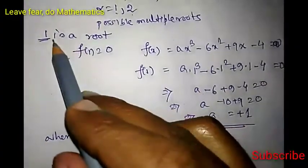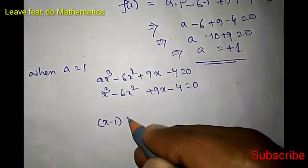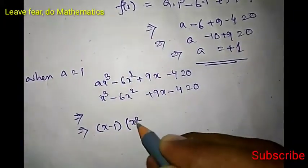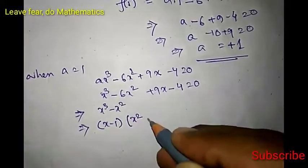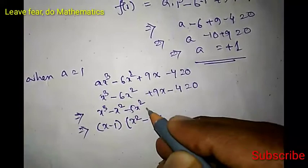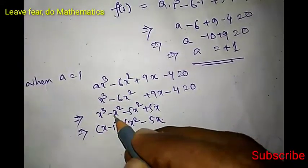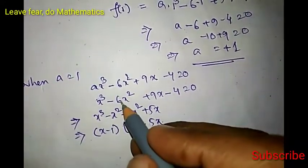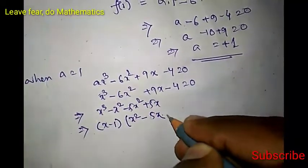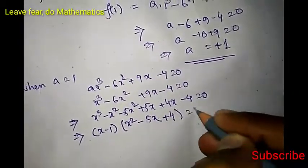When A equals 1, the equation is x cubed minus 6 x squared plus 9 x minus 4 equals 0. Since 1 is a root, x minus 1 will be a factor. Doing the division: multiply (x minus 1) by x squared to get x cubed minus x squared. Then put minus 5 x, giving minus 5 x squared plus 5 x. Then put plus 4, giving plus 4 x minus 4. Combining: x cubed minus 6 x squared plus 9 x minus 4 equals 0.